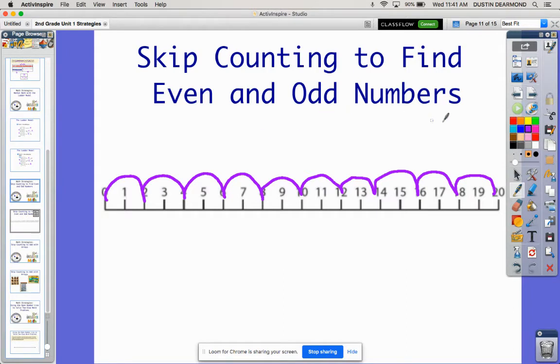So then to find the odd numbers, I'm going to use a different color, and I'm going to say we're going to start at 1. So 1 is our first odd number, 3, 5, 7, 9.